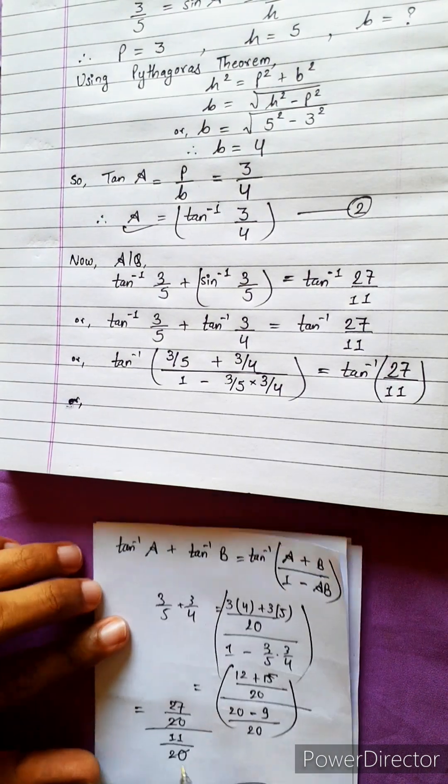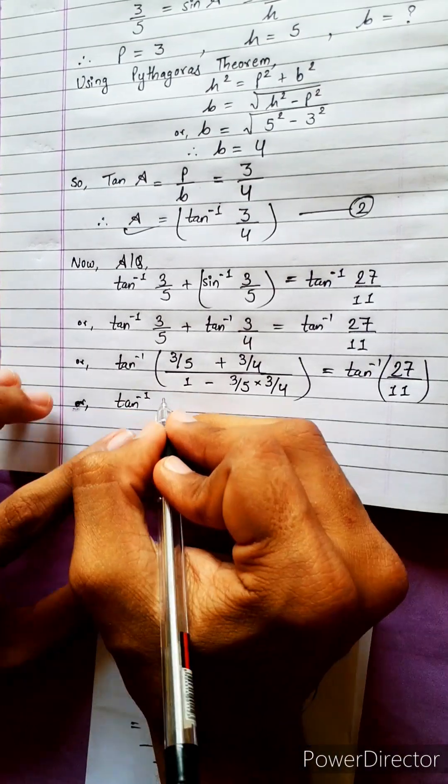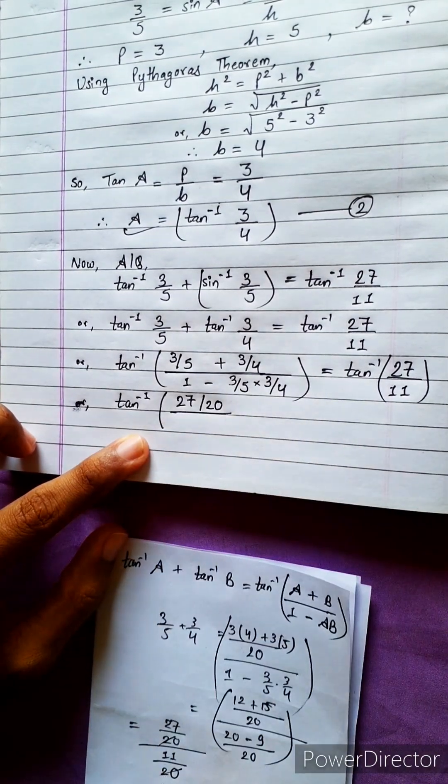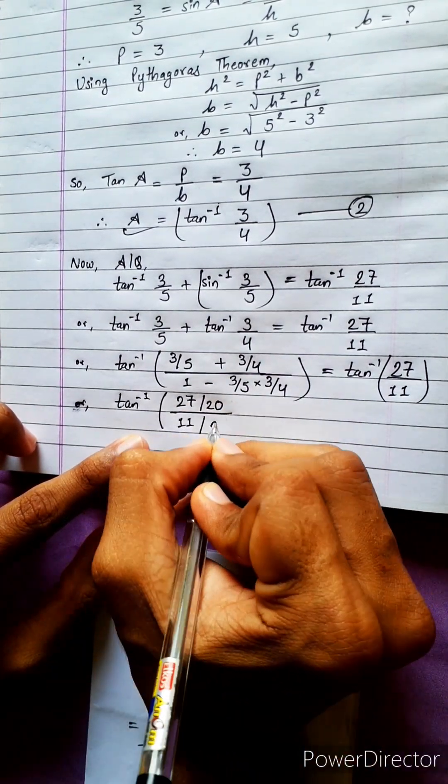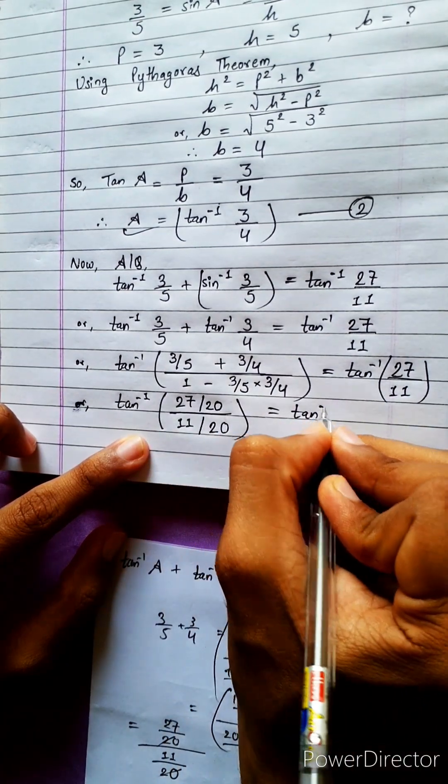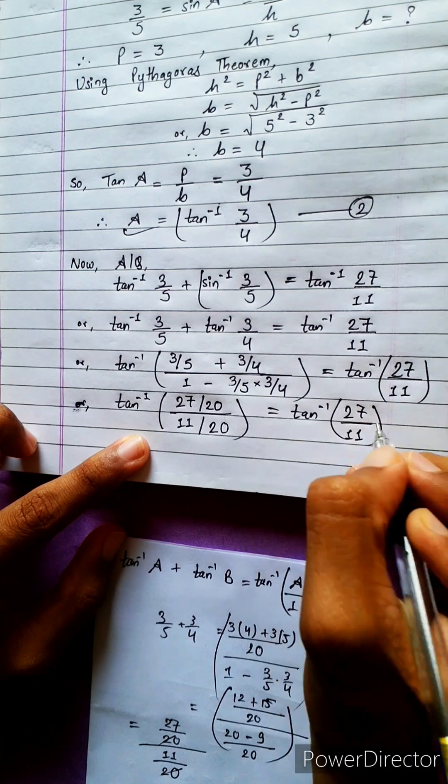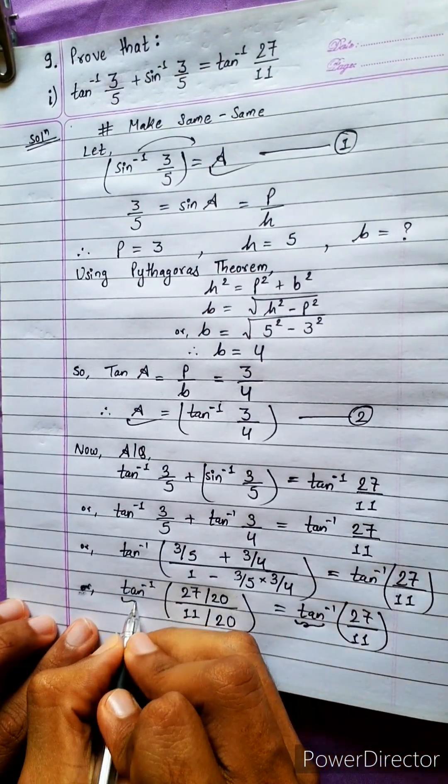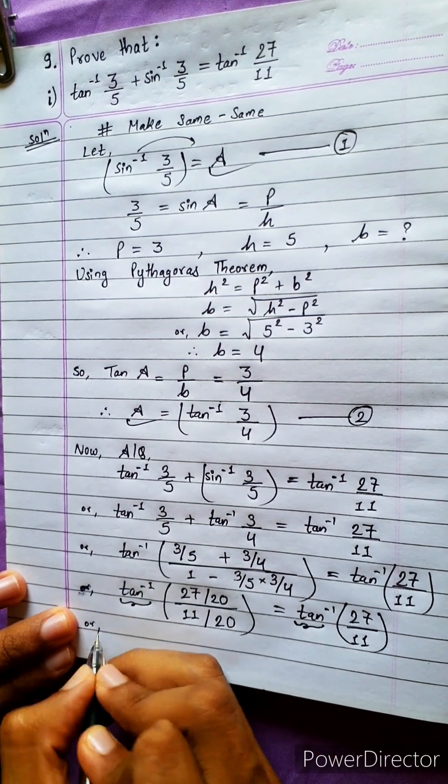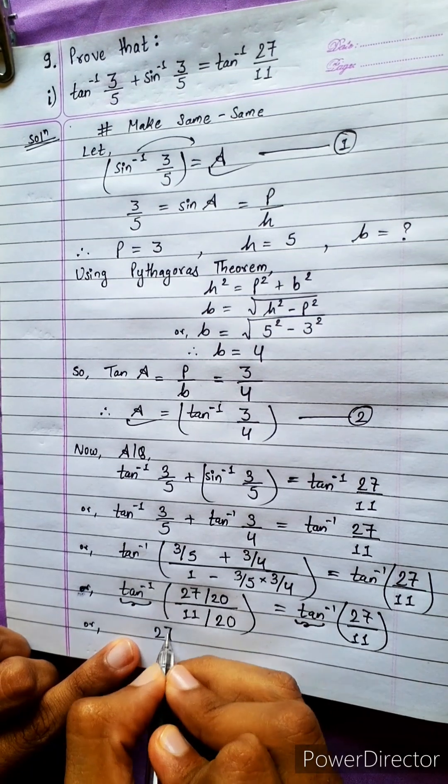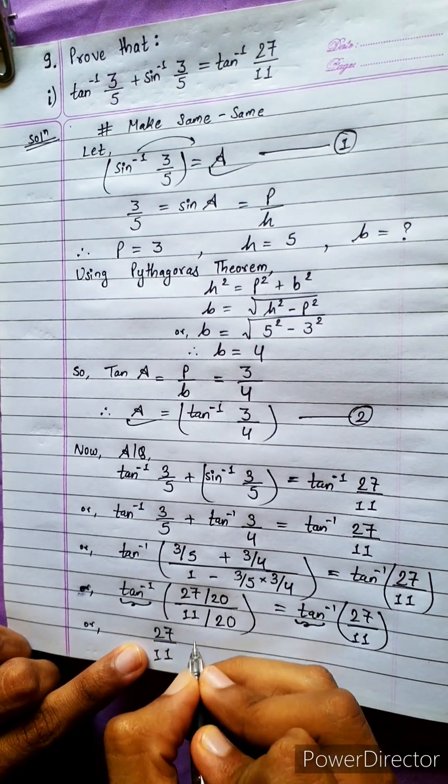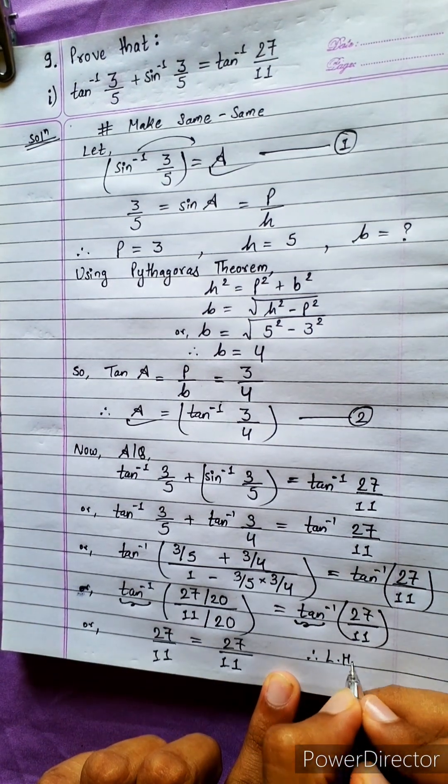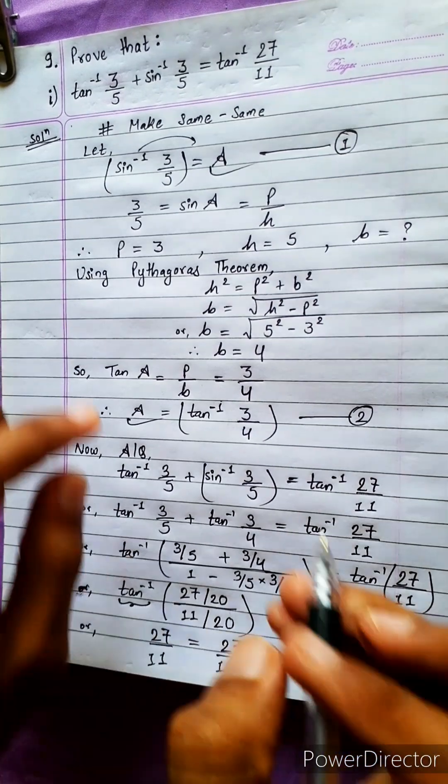Tan inverse 27 by 20 divided by 11 by 20 equals tan inverse 27 by 11. The 20s cancel, giving tan inverse 27 by 11 equals 27 by 11. Therefore left-hand side equals right-hand side. Proved.